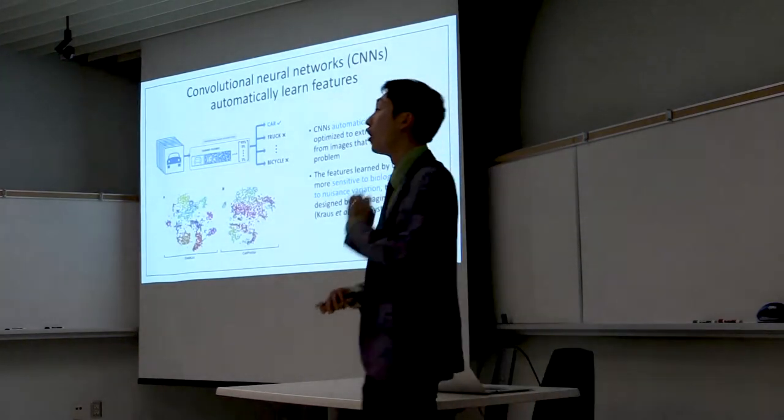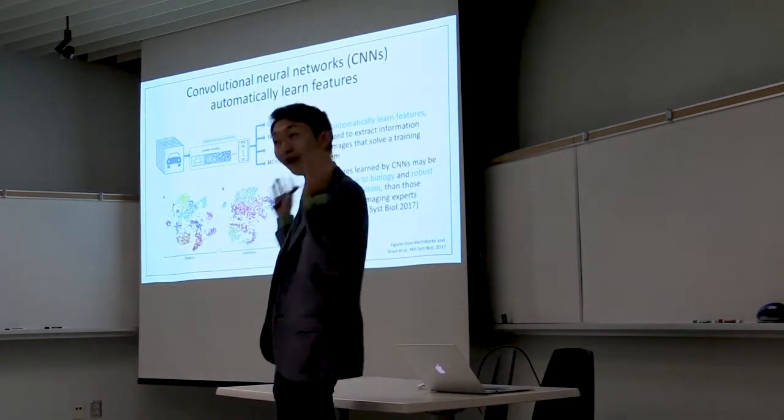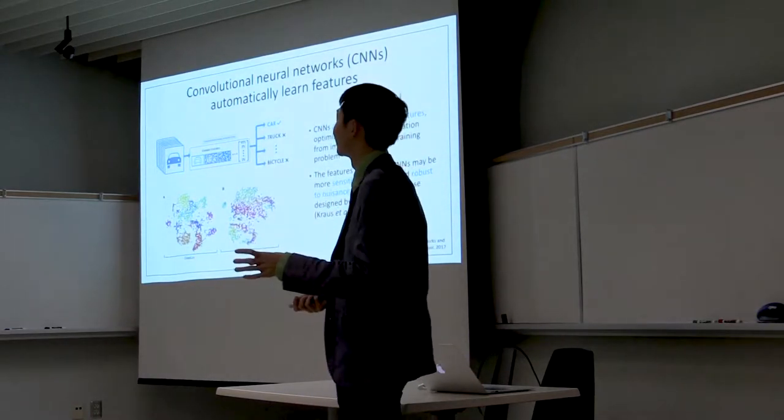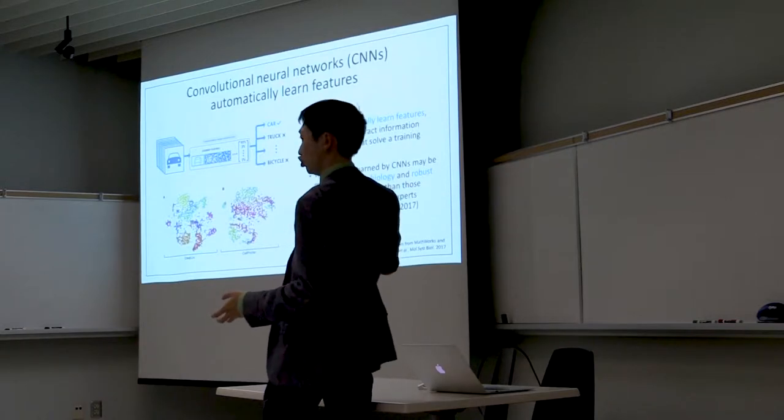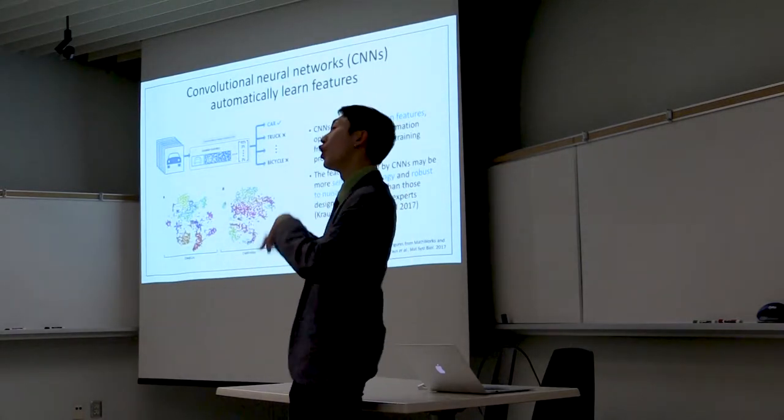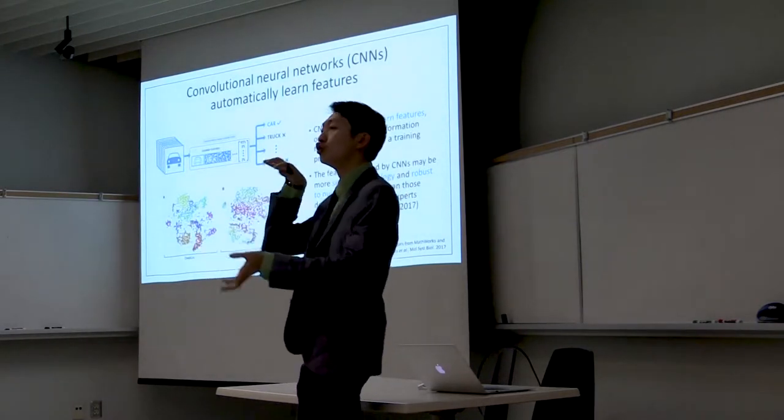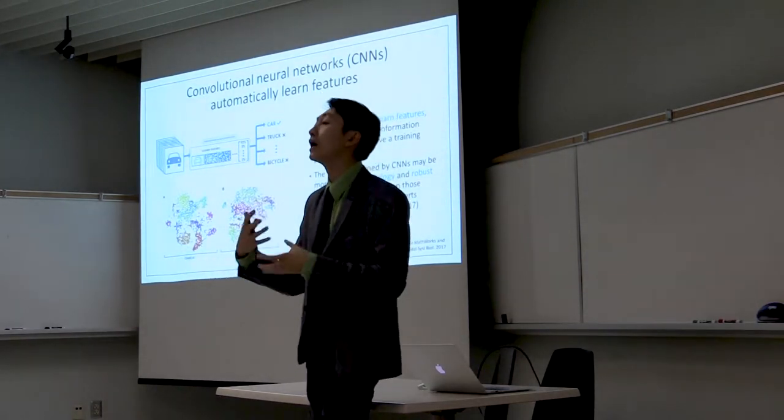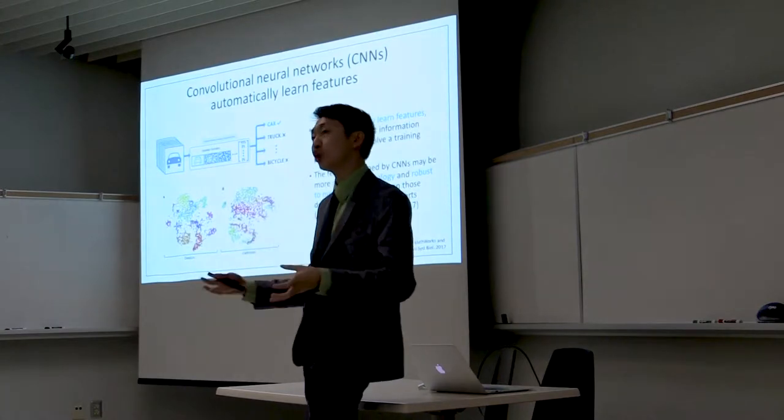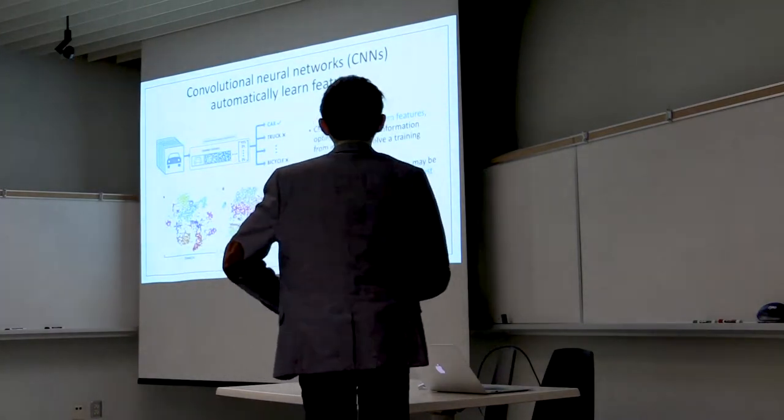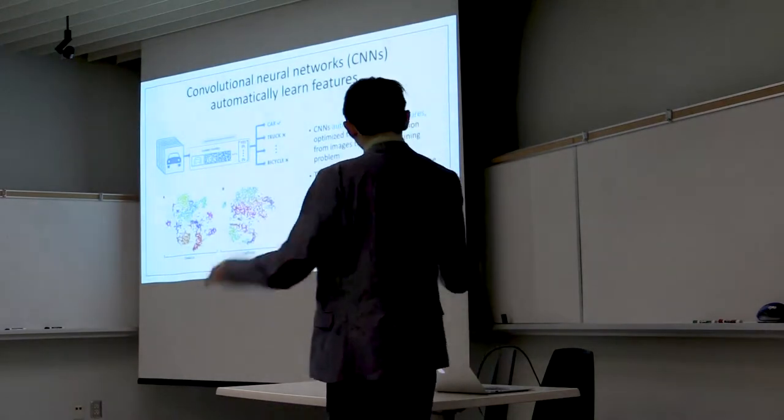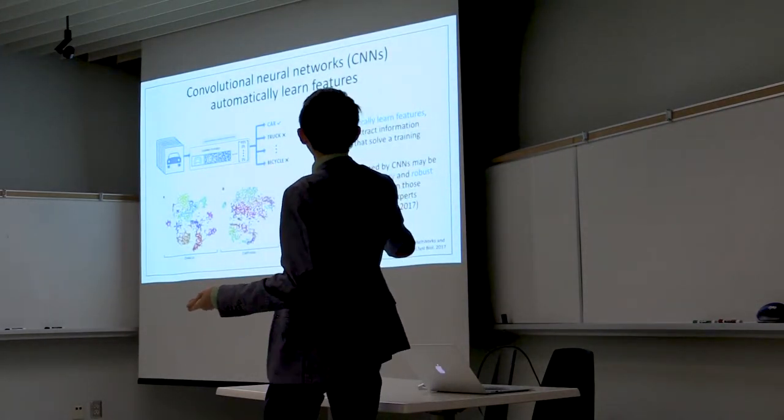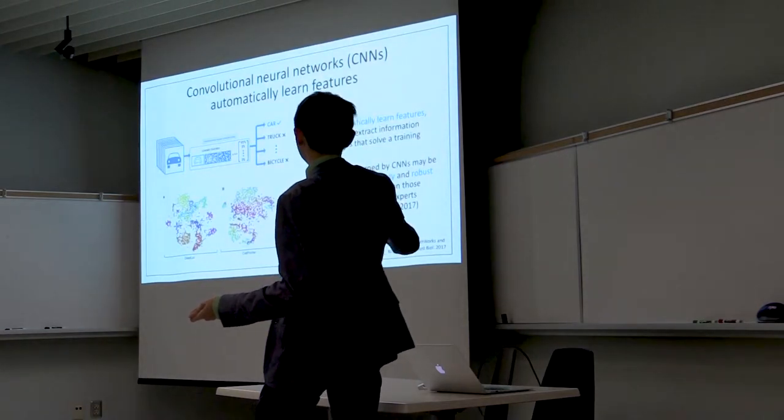The next thing that I want to talk about is convolutional neural networks. And obviously they're very famous today. But the one thing that I think people tend to miss is that convolutional neural networks automatically learn features. So what this means is that if you break open a convolutional neural network and you look at what it's learning under the hood, it's learning to design and extract features in the same way an imaging expert will design and extract features to represent the biology in their images. And since these are optimized, the features learned by CNNs may be more sensitive to biology and robust to nuisance variation than those designed by human imaging experts.